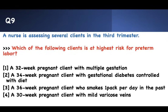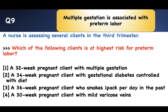Number nine: which of the following clients is at higher risk for preterm labor? All are in the third trimester at 32, 34, 36, and 30 weeks, and all are pregnant. The only difference is the condition: multiple gestation, gestational diabetes, smoked one pack per day in the past, and varicose veins. Smoking is a risk factor, but past smoking doesn't mean preterm labor — active smoking is the key. The younger or older you are, the more likely preterm labor. If you have multiple gestation, that is a significant risk factor for preterm labor — that's the right answer.